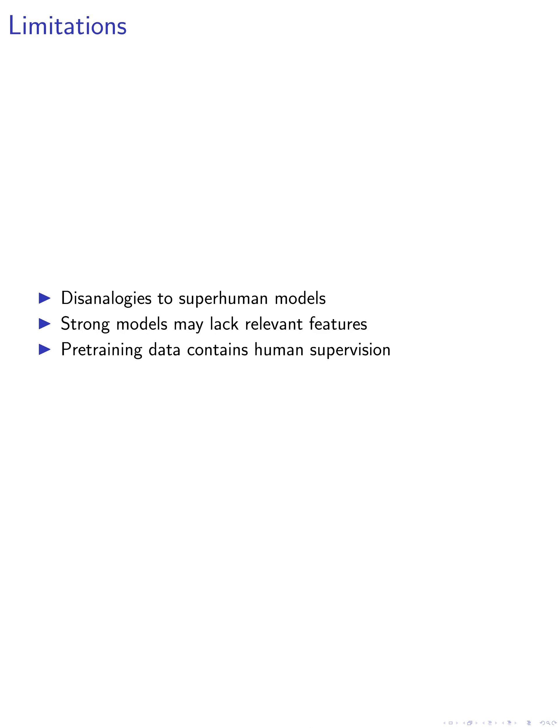However, there are limitations to this setup. It still has important disanalogies to the ultimate problem of aligning superhuman models. Future superhuman models may have salient representations of human behaviors, but the strong models may not have learned features relevant for imitating weak model predictions. Additionally, the pre-training data implicitly contains supervision from humans, making it easier to elicit strong model capabilities in the current setup compared to how superhuman models might learn in the future.